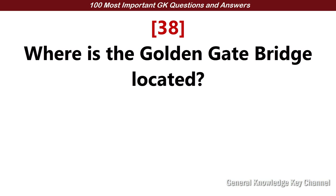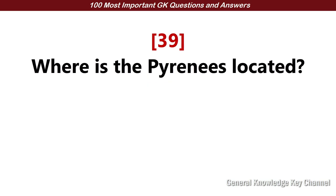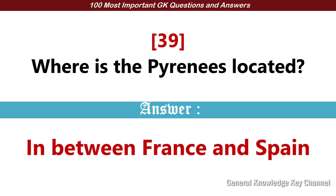Where is the Golden Gate Bridge located? Answer: San Francisco. Where are the Pyrenees located? Answer: In between France and Spain.